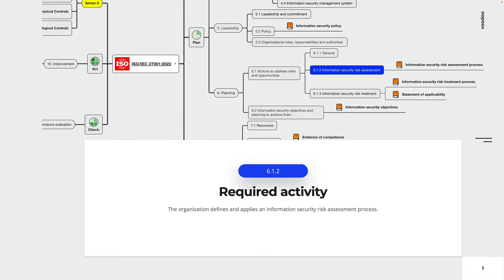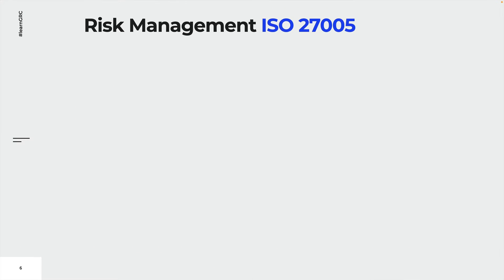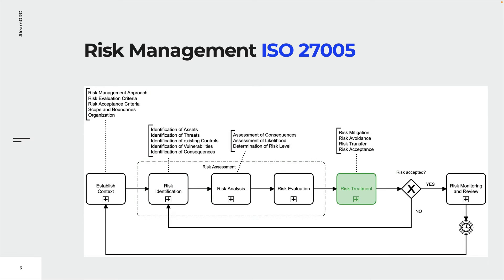The required activity is to define and apply an information security risk assessment process. Risk assessments aim to identify, quantify, and prioritize risks against criteria for risk acceptance and information security objectives. The results of risk assessments guide and determine the appropriate risk treatment plans that are necessary to meet an organization's objectives. Risk assessments include three steps: risk identification, risk analysis, and risk evaluation.